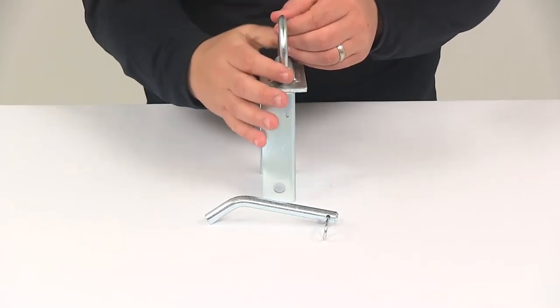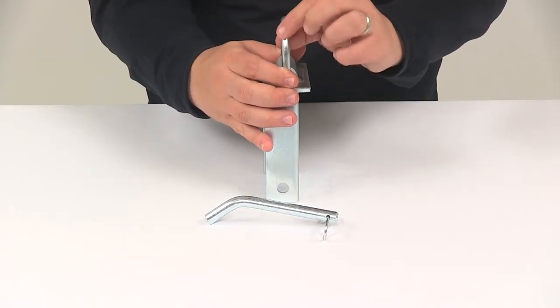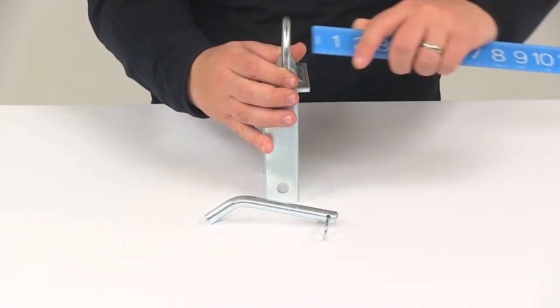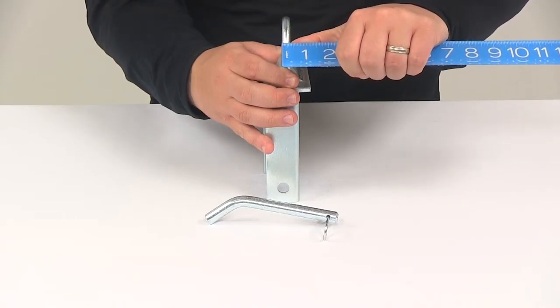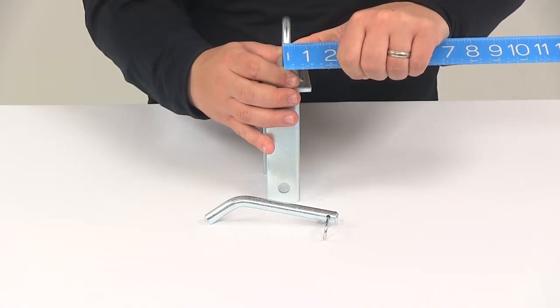The diameter of the D-ring, basically just measuring the thickness, that looks to measure about 3 eighths of an inch in diameter.